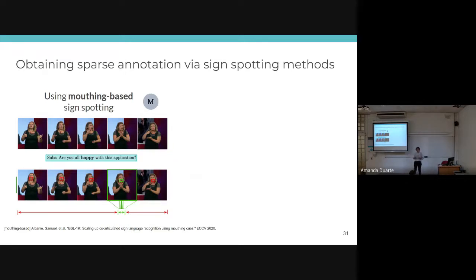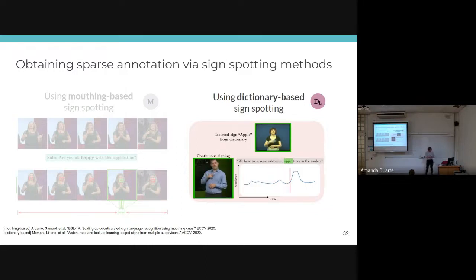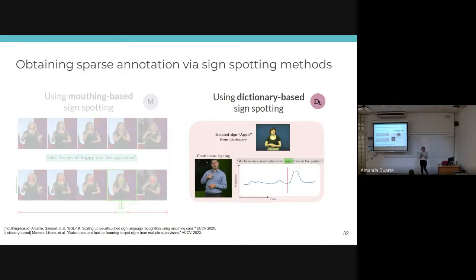The first technique is mouthing-based sign spotting, proposed in an ECCV 2020 paper. It relies on the observation that some signers mouth what they are signing — not all signers do this, but sometimes mouthing accompanies hand movements and facial expressions. We use this technique to identify words from the subtitles in the long videos and mark them as annotations. The second technique is dictionary-based sign spotting, proposed in an ACCV 2020 paper. Instead of using mouthing cues, this uses dictionary examples — in this case MSASL and WLASL — comparing isolated sign videos against the long video to find where each sign occurs.